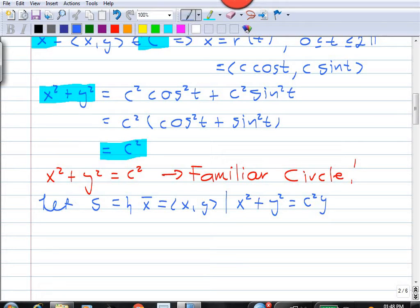so that x² + y² = c², then what we've shown here is that if we take any point on our curve C, then this point is also on the circle. So, in other words,